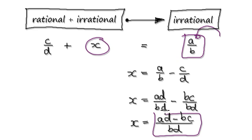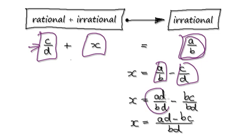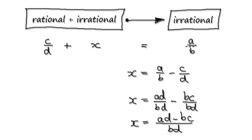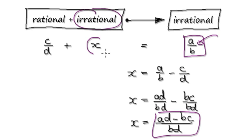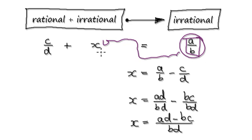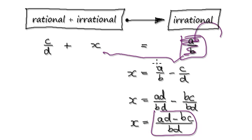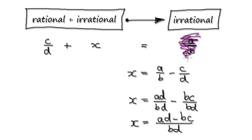If you make this assumption, then x can be written as a fraction. Because here you have one block plus this block equals this block — take away c over d from both sides, so x equals a over b minus c over d. Now, if you make this assumption, x can be expressed as a fraction. But x is supposed to be an irrational number, so you contradict yourself. You can't make this assumption. Therefore, the answer has no choice but to be an irrational number.